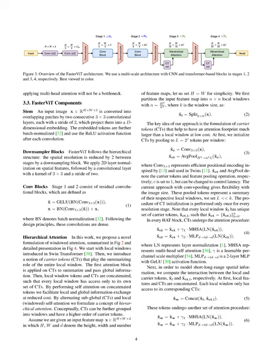We start with an input image represented as a three-dimensional matrix with height, width, and three color channels. We transform this image into overlapping patches through two sequential convolutional layers. Each of these layers applies a 3×3 filter across the image, moving two steps at a time — a stride of two. This process effectively maps the patches into a d-dimensional space, generating what we call embedded tokens. Following this, we apply batch normalization to these embedded tokens, and after each convolution we use the ReLU activation function, which helps introduce non-linearity and control the flow of values through the network.